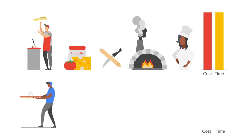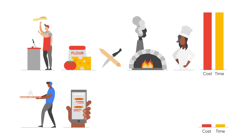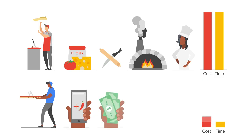If you change from on-premises pizzas to Google Cloud pizzas, suddenly you'd be responsible for a lot less. You would just choose the pizza you want, maybe the custom toppings, order it and eat. And if you need more pizzas one day, you just order more and pay for what you order.